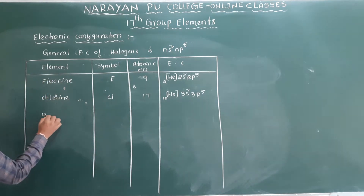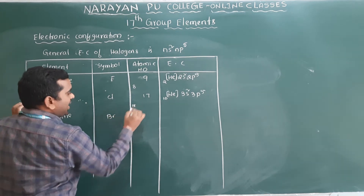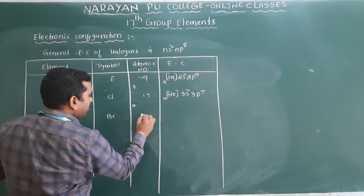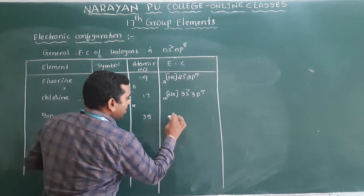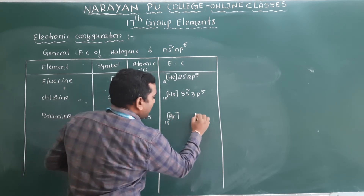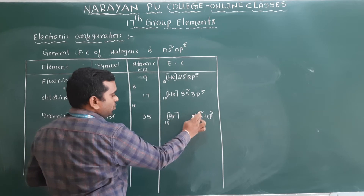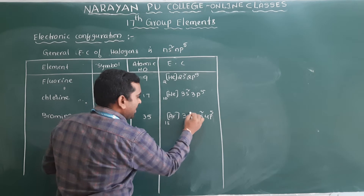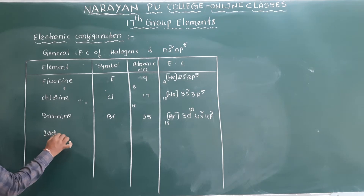Next is bromine, symbol Br. Add 18 to the previous atomic number: 17 + 18 = 35. So bromine's atomic number is 35. The configuration is [Ar] 3d¹⁰ 4s² 4p⁵, because argon is 18, and the d-block orbitals must be filled.